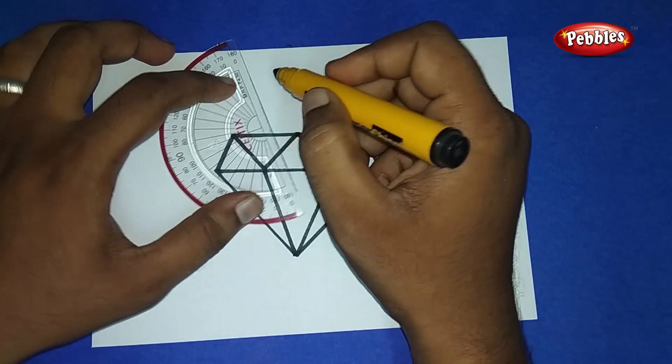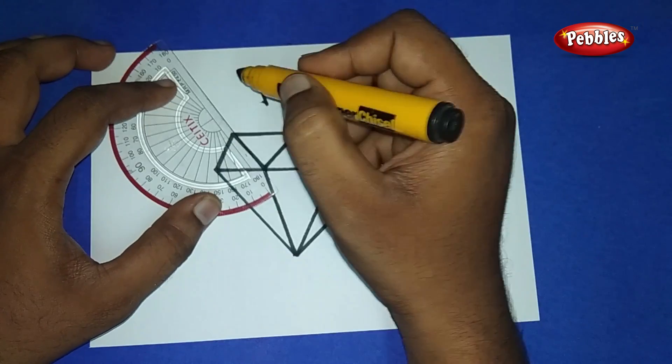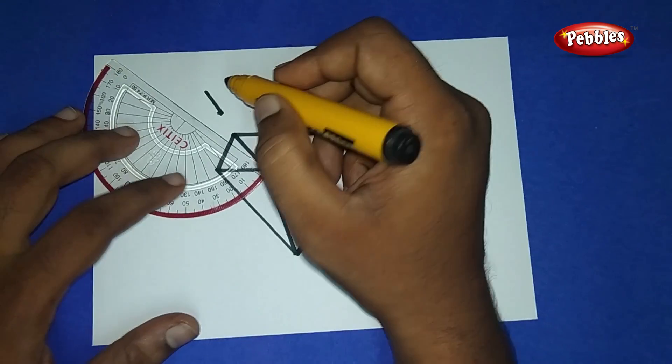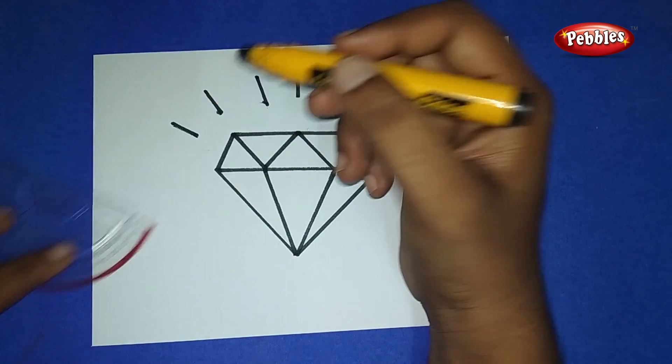Around the diamond like this, draw small lines. Now we have finished the right side. Similarly, on the left side, draw small lines.